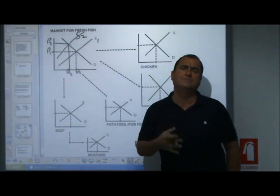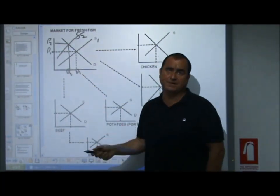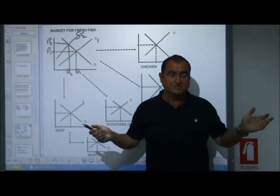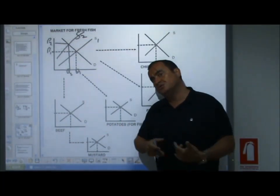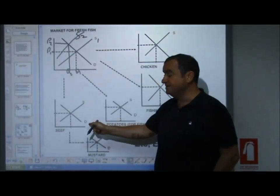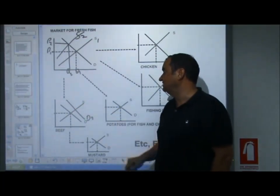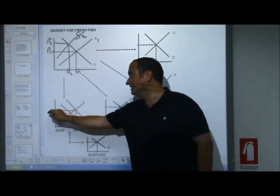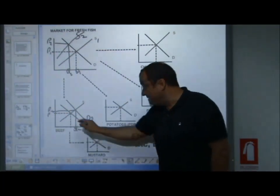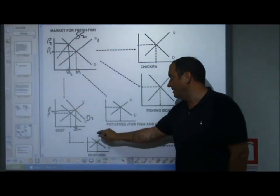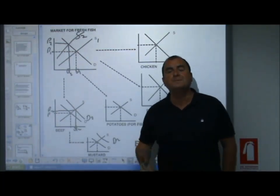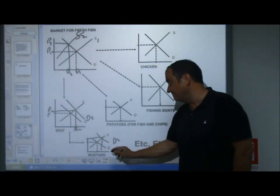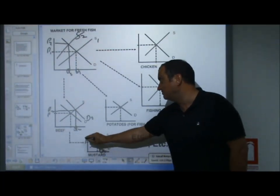The higher price of fish signals to buyers to reduce their quantity demanded — we move along the demand curve, reducing quantity demanded. Through the price mechanism, the signal of higher fish prices leads people to buy a substitute for fish, such as beef. The beef industry sees a rise in quantity demanded, signalling beef farmers to increase quantity supplied, raising the price of beef. That in turn may affect the mustard market — if people are buying more beef, they'll buy more mustard as a complement, since they're in joint demand. Demand for mustard increases, signalling mustard suppliers to increase their quantity to Q2, and the price of mustard rises — all because fishermen faced higher costs of production.